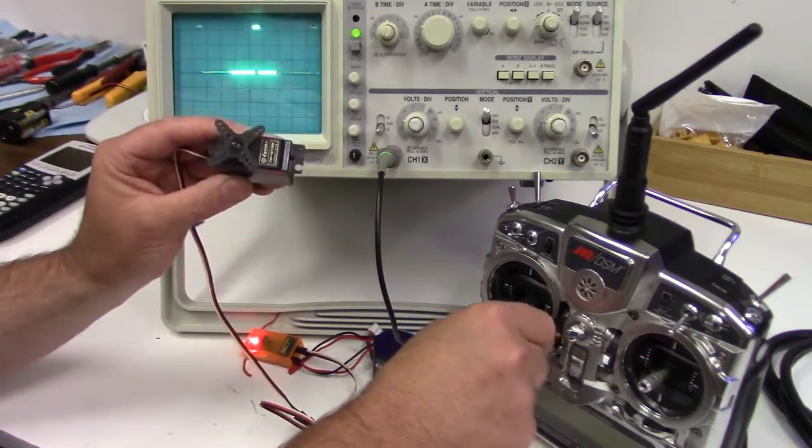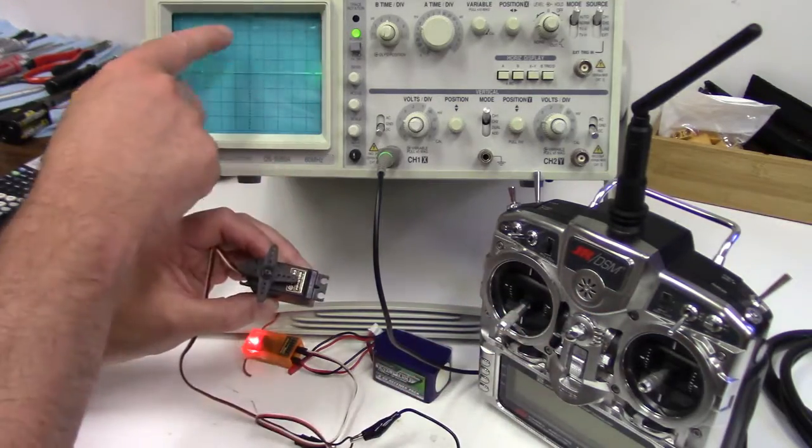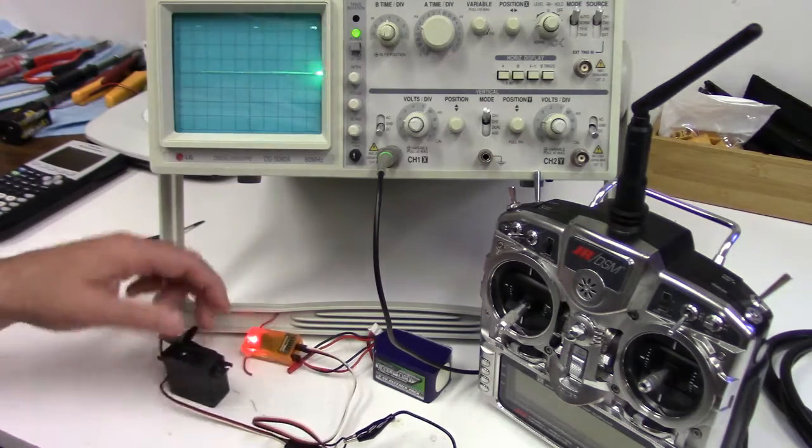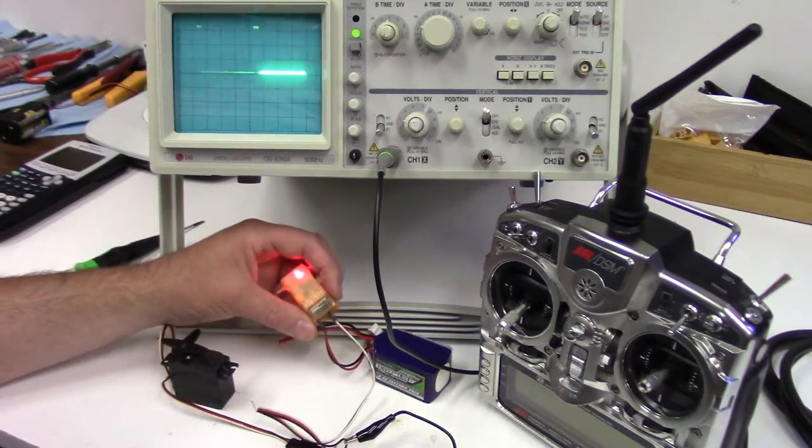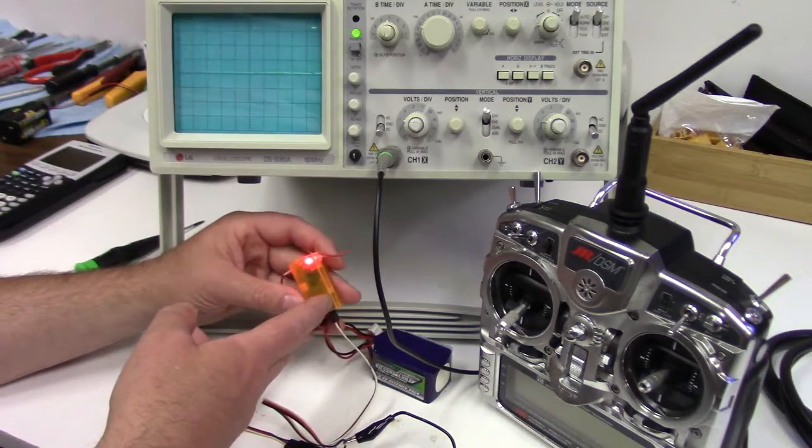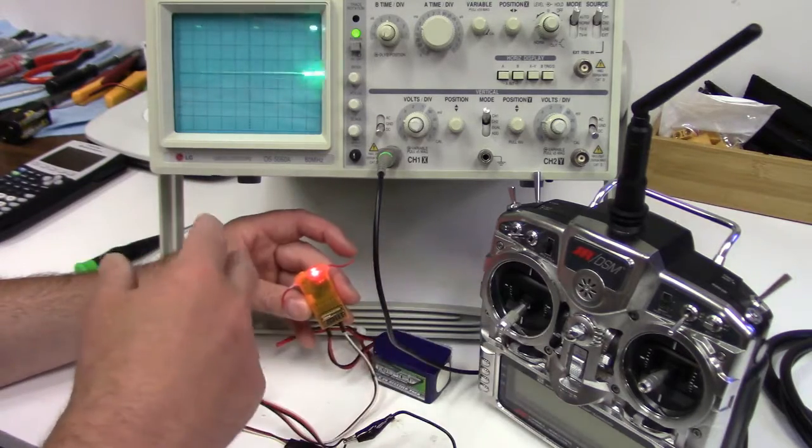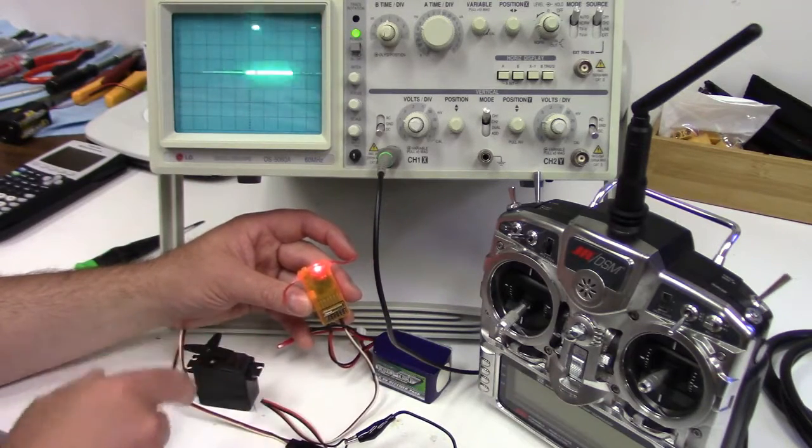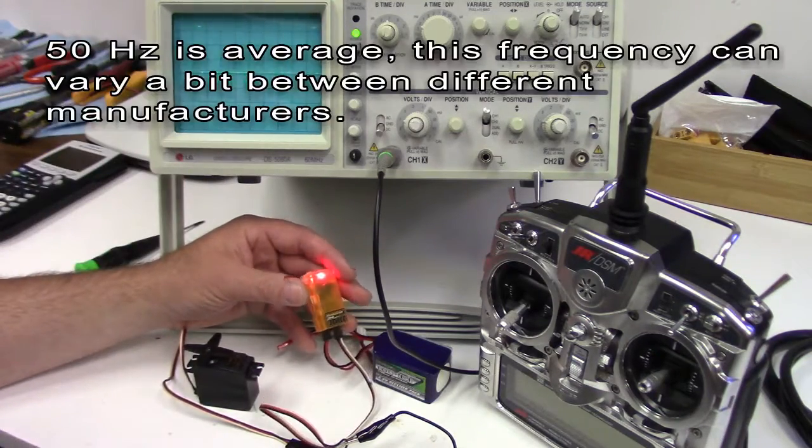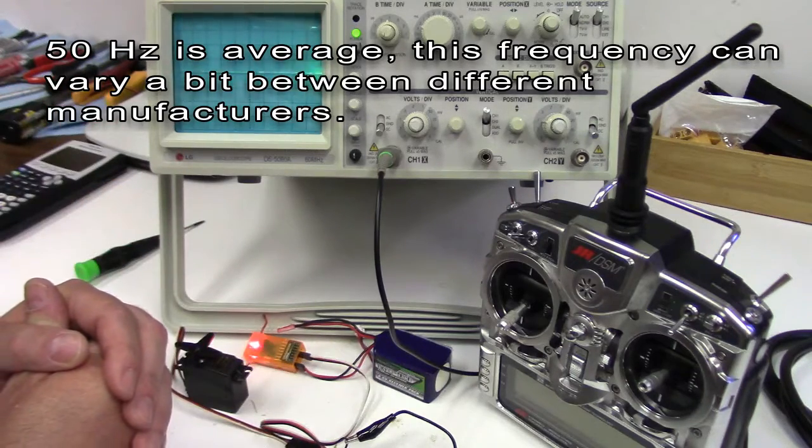So as I move the stick, the rudder stick, you'll see the servo move and we'll be able to see what's going on with the signal on the scope. So as many know, or as I explain on my servo page, the average frequency that comes out of these, meaning how many times the signal is refreshed that's going to the servo, is 50 Hz, 50 times per second. We can verify that on here, and hopefully that'll help you understand it a little bit better.